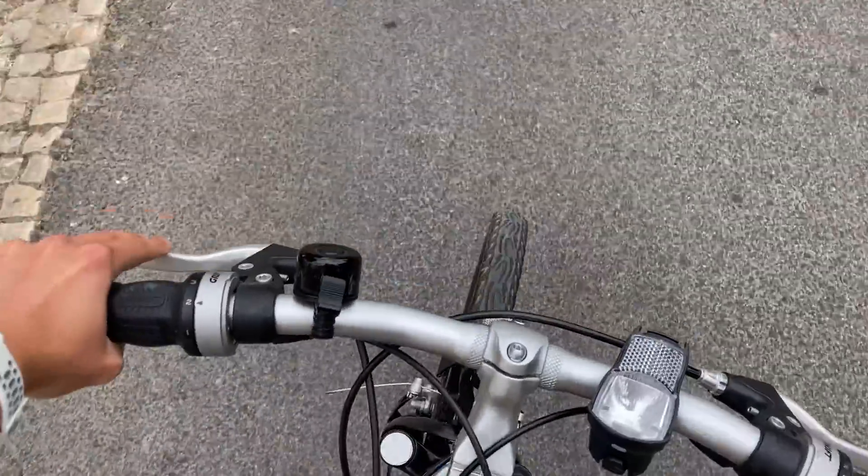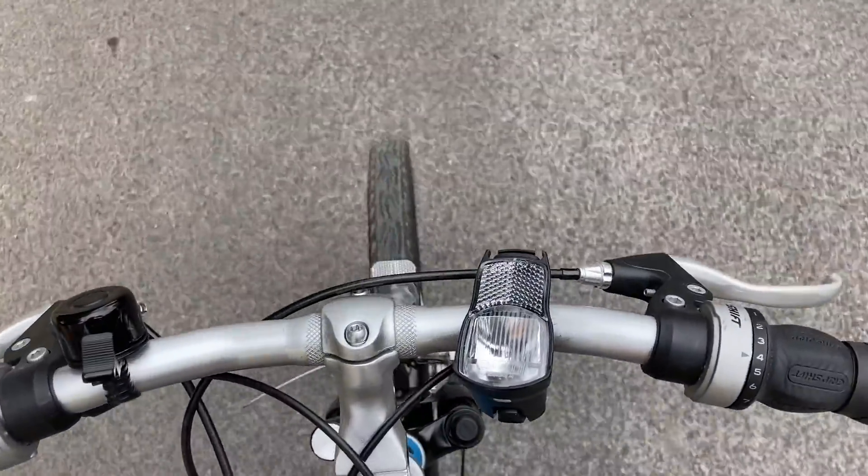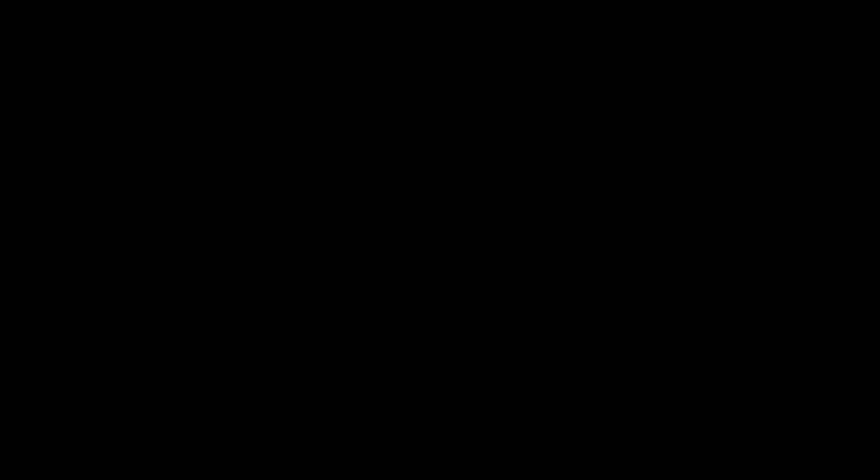A more subtle property of bike tracks relates to the fact that a cyclist only controls the front tire of their bike, while the back wheel always rolls toward the front one.